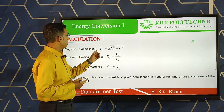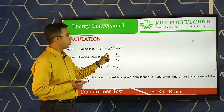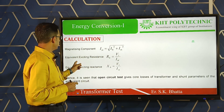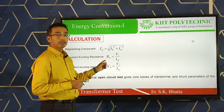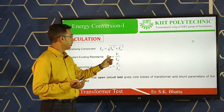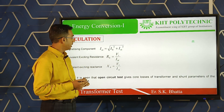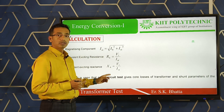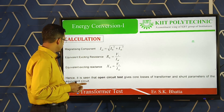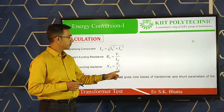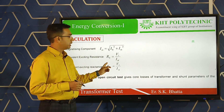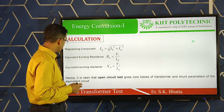The no-load current has two components: Iw (working component) and Im (magnetizing component). The magnetizing component is Im = √(I₀² − Iw²). The equivalent exciting resistance R₀ = V₁ / Iw, and the magnetizing reactance X₀ = V₁ / Im. Thus, the open circuit test gives the core loss and the shunt parameters R₀ and X₀ of the equivalent circuit.